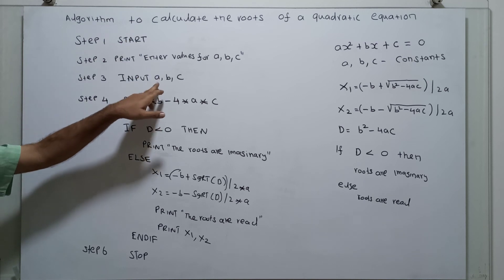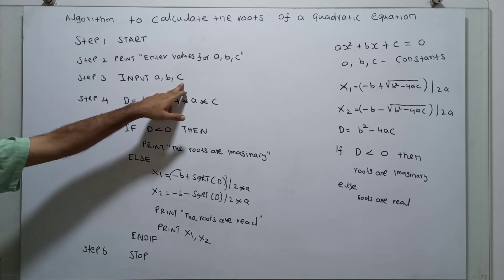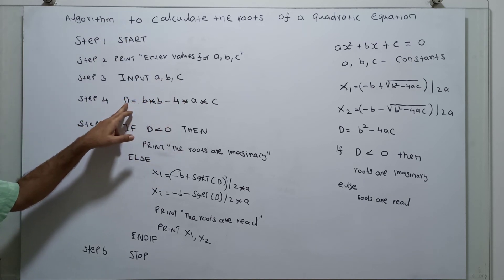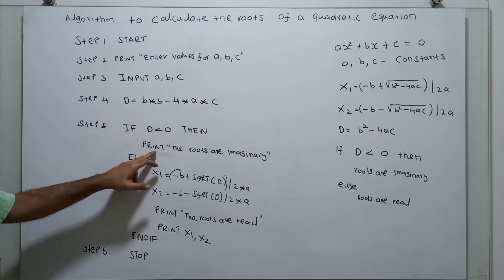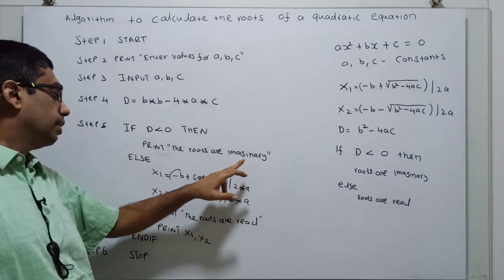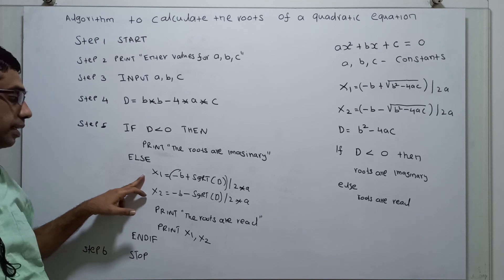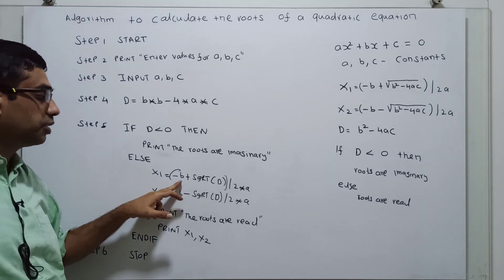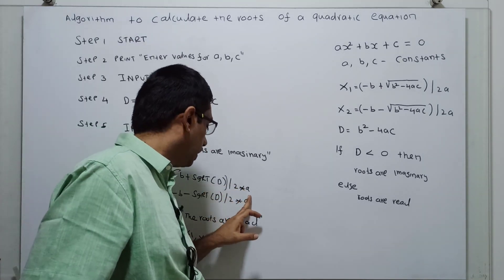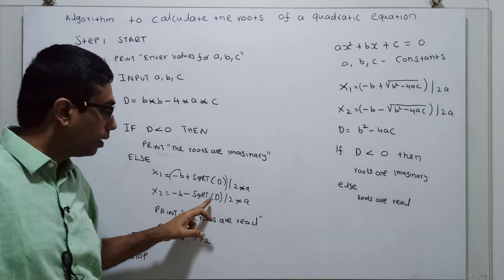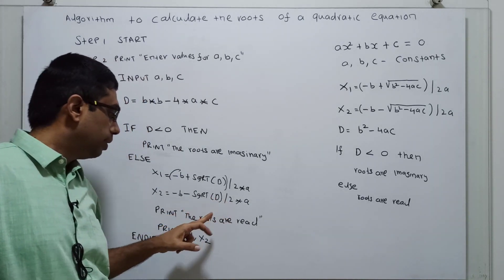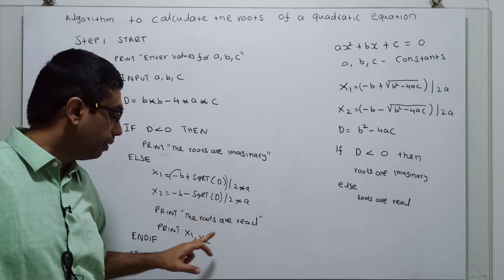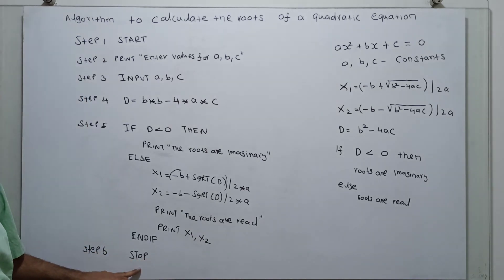We take A, B, C as constants as input. We calculate the discriminant. If discriminant is less than 0, we print the roots are imaginary. Otherwise, we calculate the roots: x1 equal to minus b plus square root of d divided by 2 star a, x2 equal to minus b minus square root of d divided by 2 star a. And we print the roots are real. That's it.